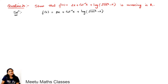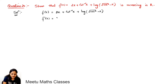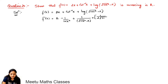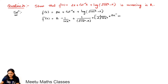Now, a function is an increasing function if the derivative is positive in an interval. So first of all, find its derivative. The first derivative is: 2 times the derivative of x which is 1, plus the derivative of cot⁻¹(x) which is −1/(1+x²), plus the derivative of log of something is 1 over that something. The derivative of √(1+x²) is 1/(2√(1+x²)) times the derivative of 1+x² which is 2x, then minus the derivative of x which is 1.